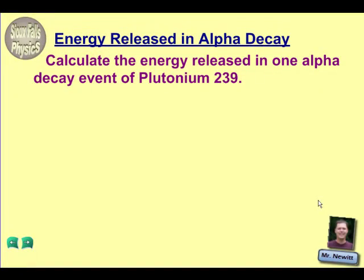Welcome here on this problem with Sioux Falls physics teachers. We're going to look at some energy released in alpha decay. So we want to calculate the amount of energy that gets released in one alpha decay event of, in this case, plutonium 239.